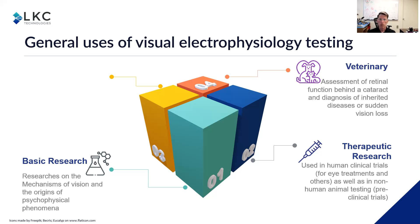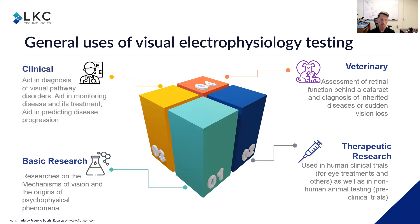In veterinary uses, for pet dogs or other animals that might get a cataract, you might want to test to make sure the retina is still functioning before proceeding with cataract surgery, or it could be used to look for inherited diseases or sudden vision losses. For human clinical use, it can be used as an aid in diagnosis of visual pathway disorders, to monitor disease or its treatment — for example, to see whether a glaucoma treatment is actually helpful — and also to aid in predicting disease progression. There are papers published on using it for progression in inherited diseases like retinitis pigmentosa, as well as acquired diseases like CRVO.